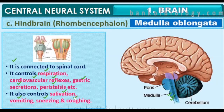This is the last part of the brain chapter. The medulla oblongata is the major control center for every involuntary activity in the body. It also controls vomiting, sneezing, and coughing — essentially the reflexive responses. The respiratory control center was in the pons and medulla; the cardiovascular control center was also in the medulla.